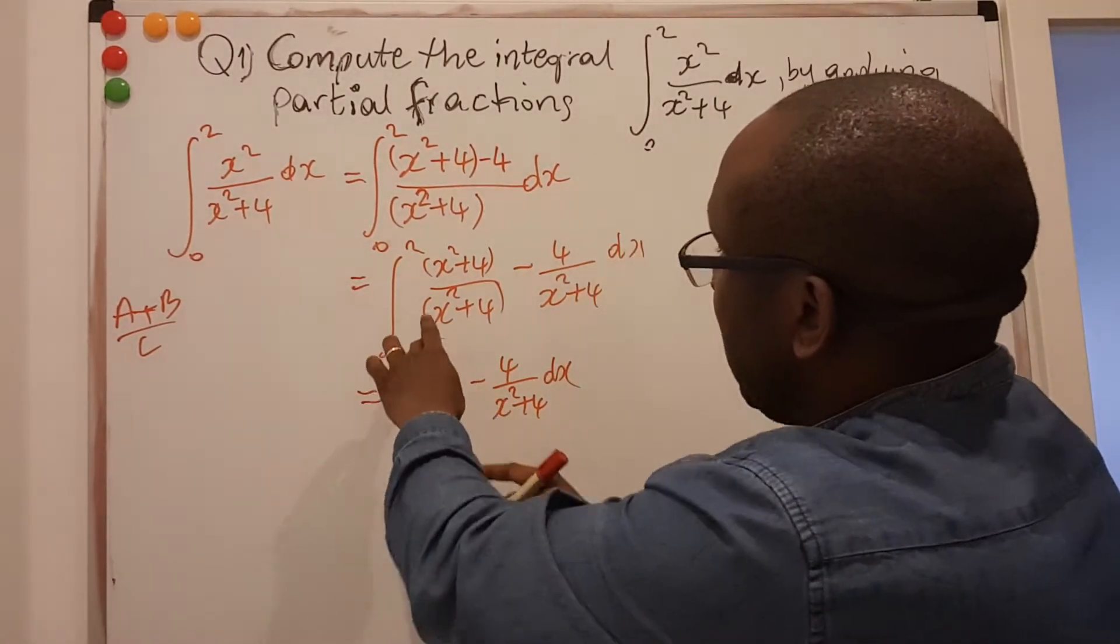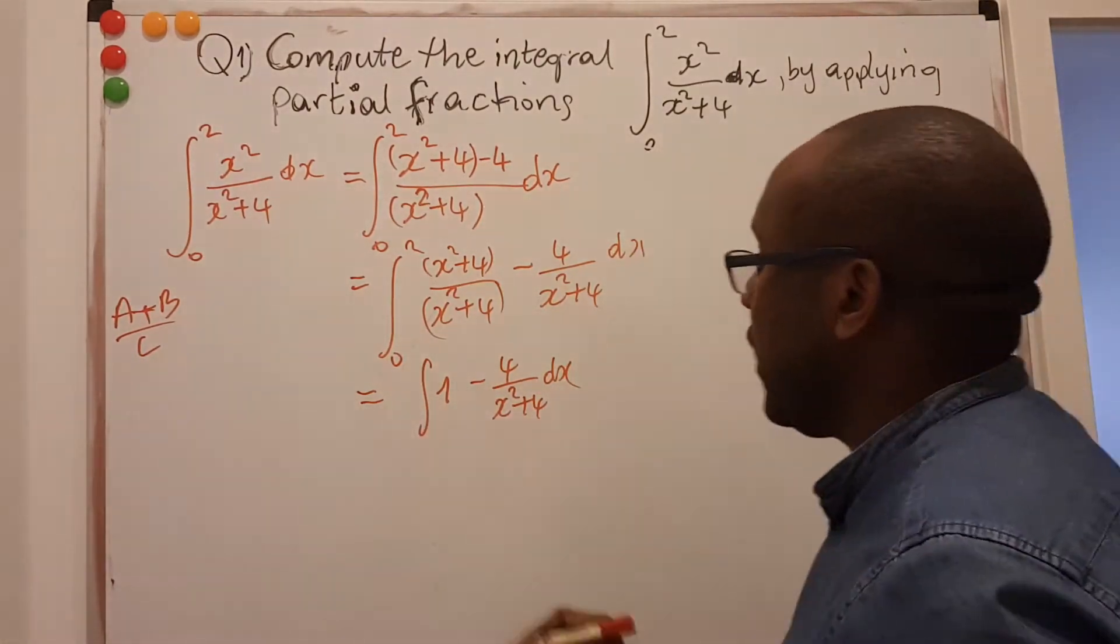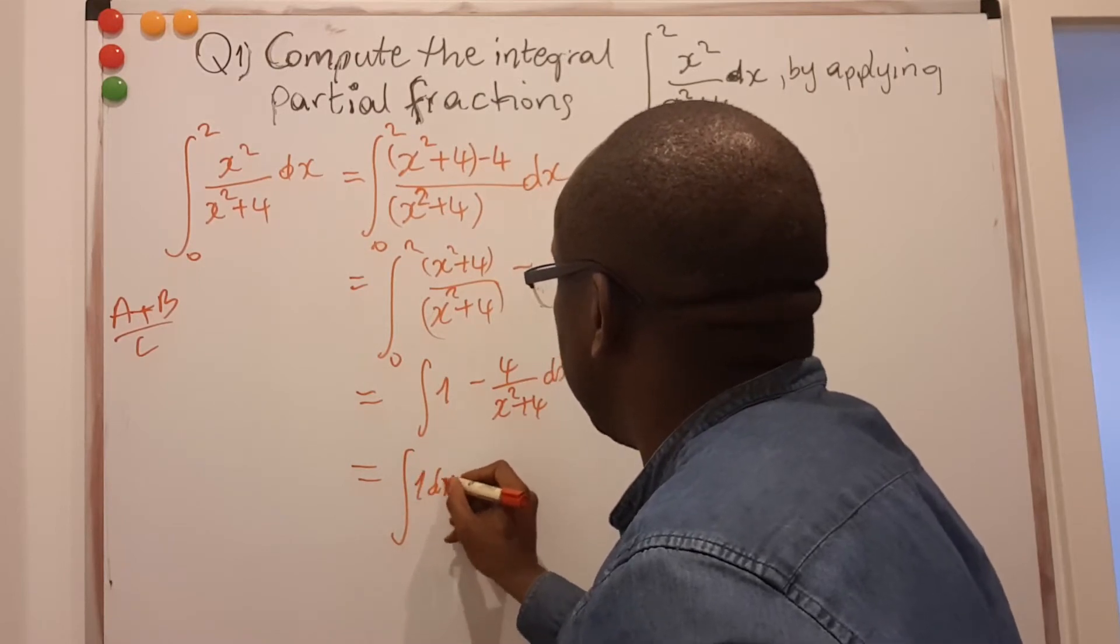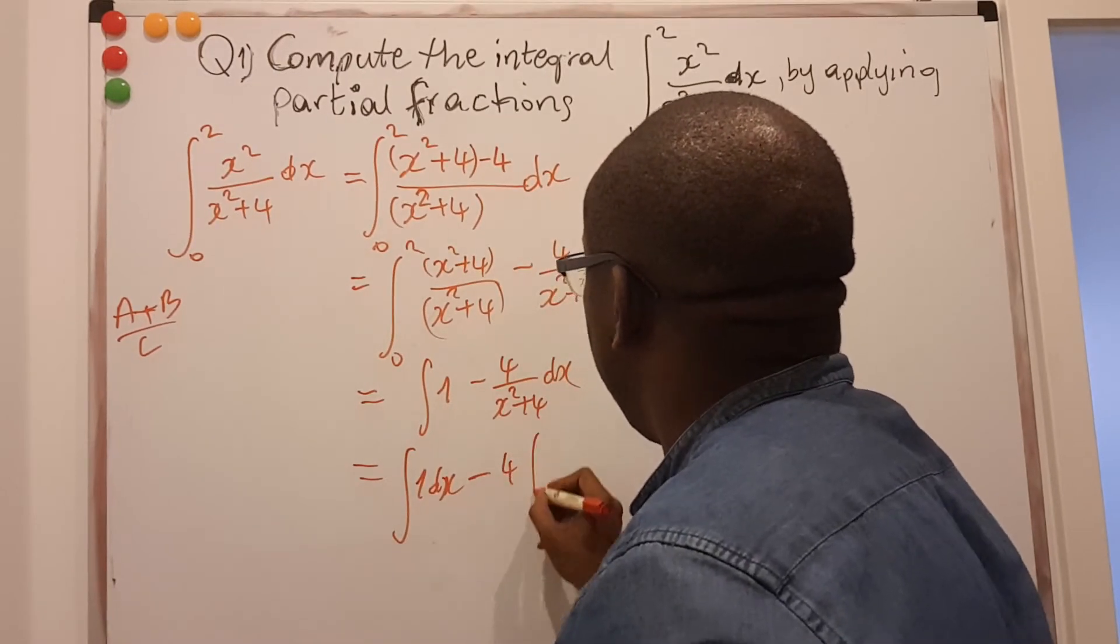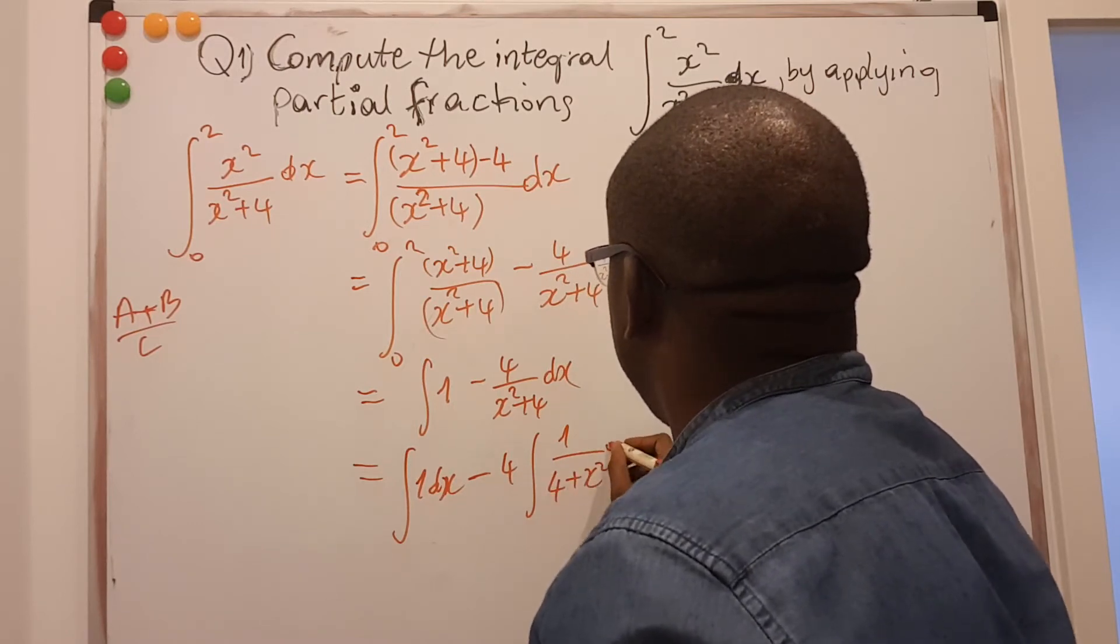I will just leave the limits for now. But this is distributed, so I can distribute my integral inside. And I will get the integral of 1 dx minus 4, the integral of 1 all over 4 plus x squared dx.